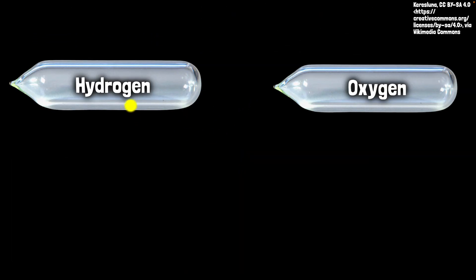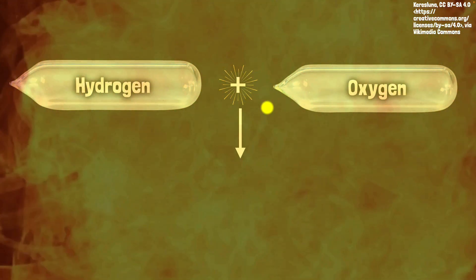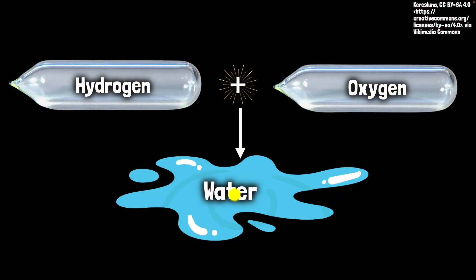Here's another example. If you take hydrogen gas and mix it with oxygen gas and add a spark, they will explode to give you a completely new substance — water. It would be wrong to say that water is hydrogen and oxygen mixed together. No, it's a new thing, not a mixture.